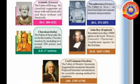The second scientist is Theophrastus. He was also from Greece. He is known as the father of botany. He classified plants into annuals, biennials, and perennials.